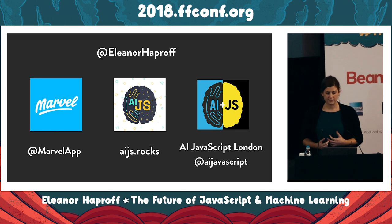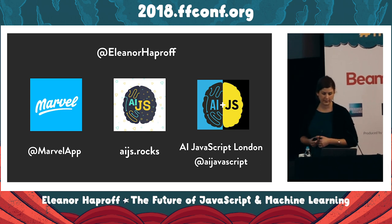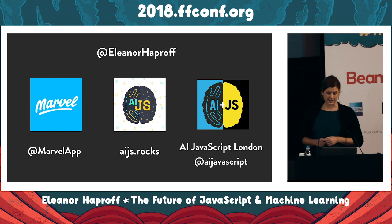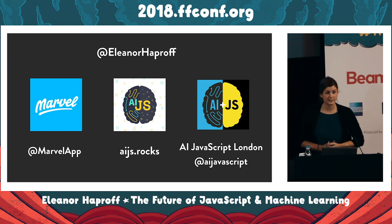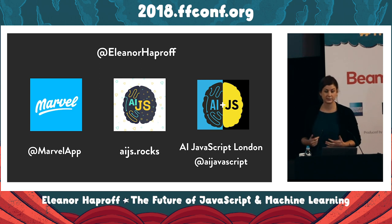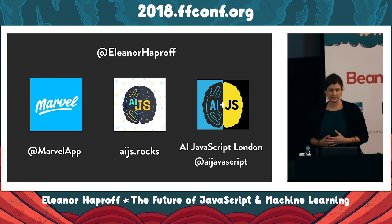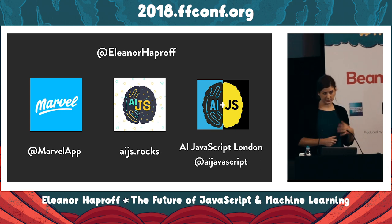A little about me. My name is Elena, and I'm a JavaScript developer. I'm currently working at Marvel App, which is a collaborative design platform. And as Remy mentioned, I'm the co-creator of the site AIJS.rocks, which is a collection of AI-powered JavaScript apps and demos. And I also run AI JavaScript London, which is a meetup for JavaScript developers on all things AI and machine learning.